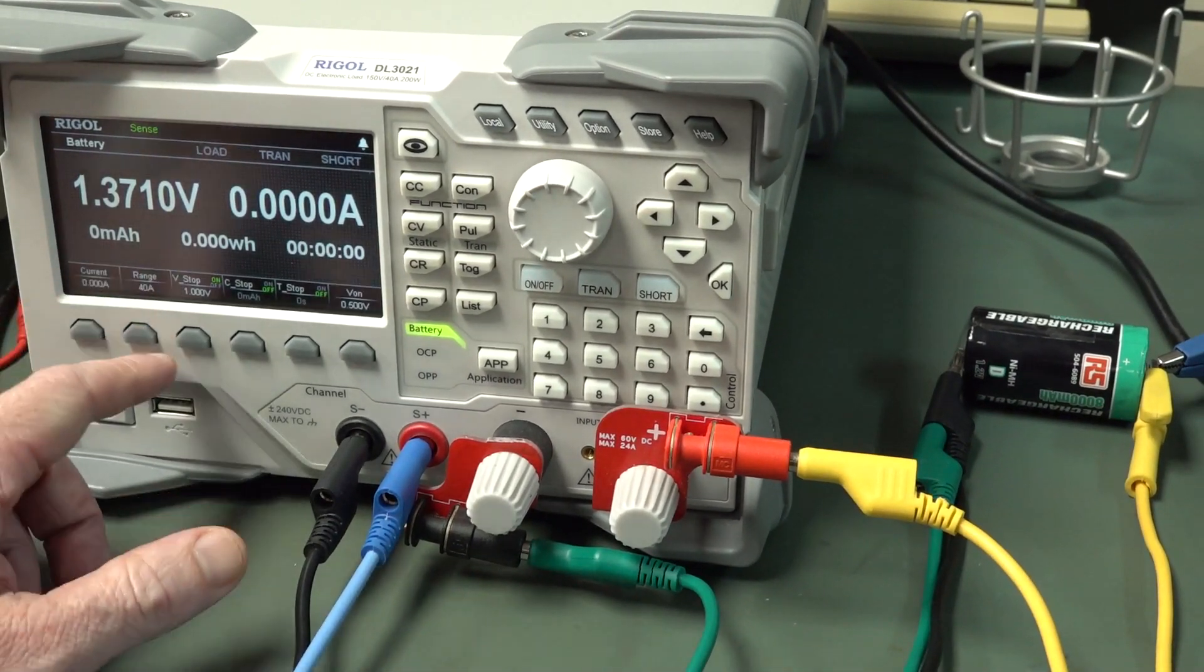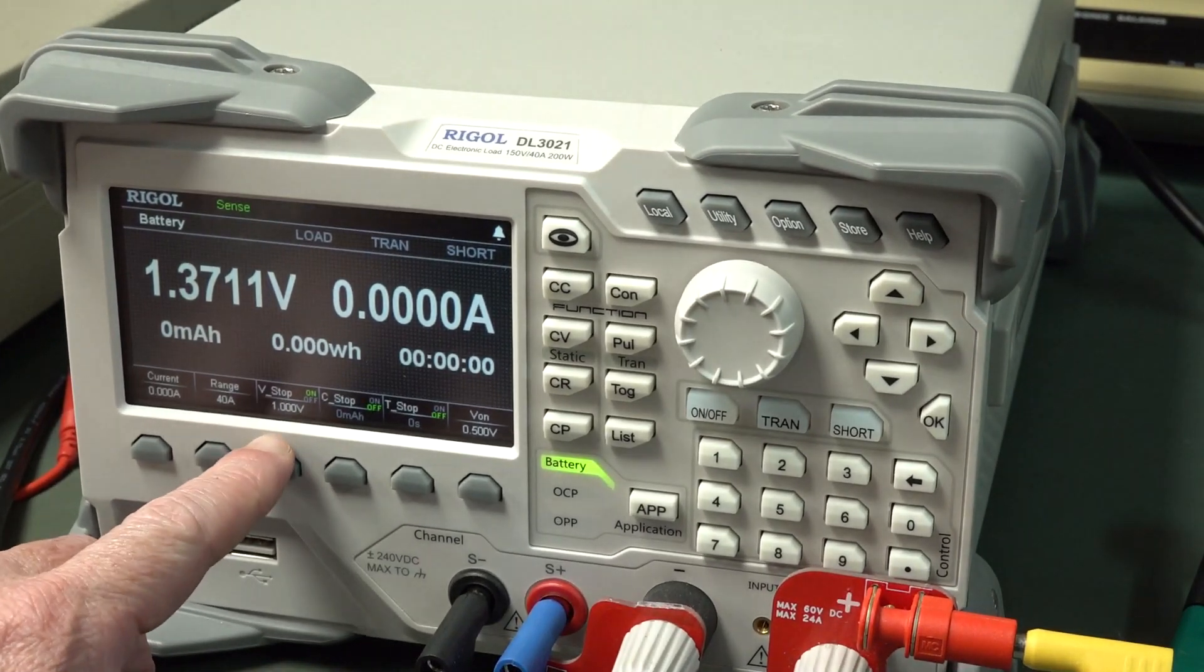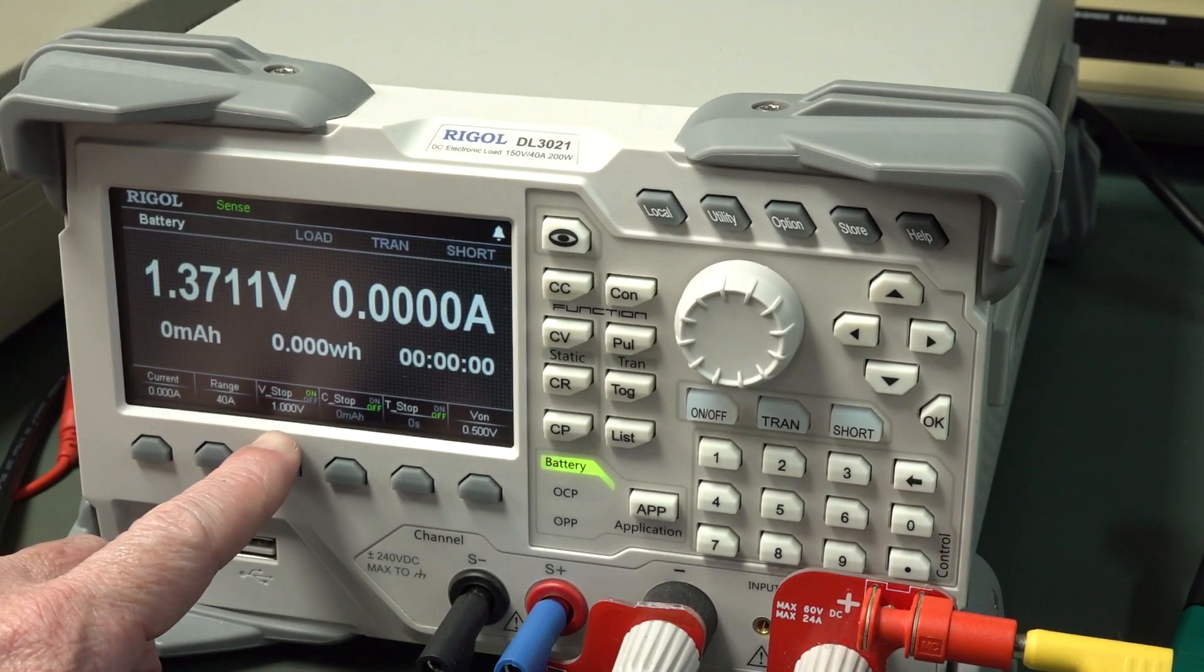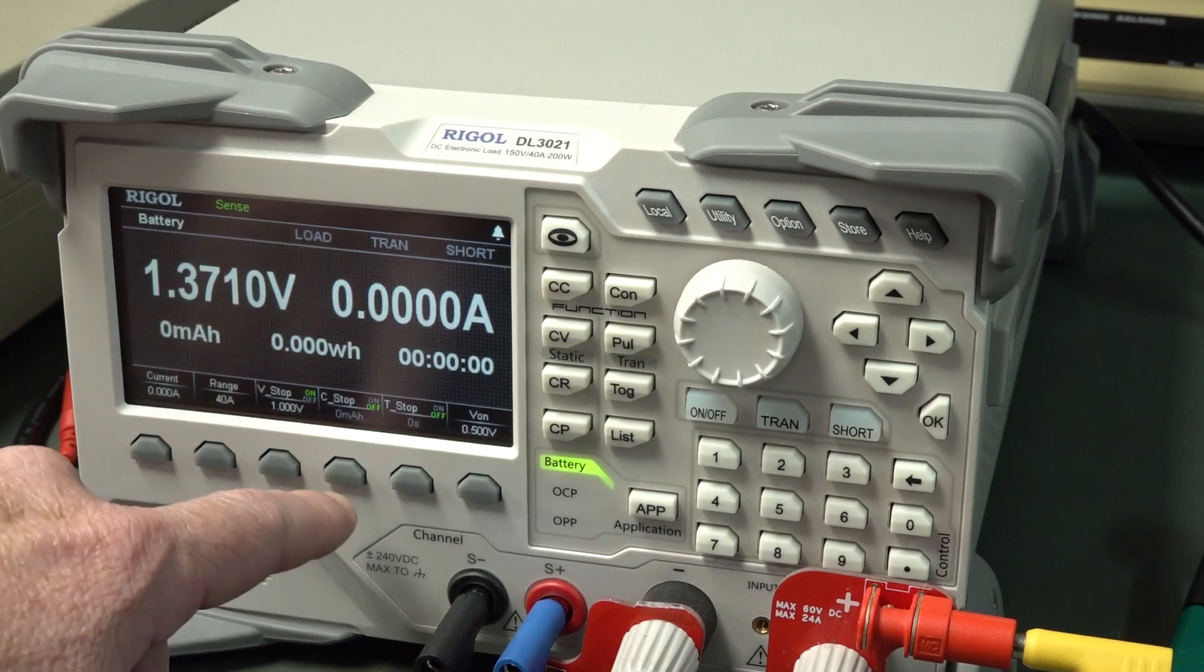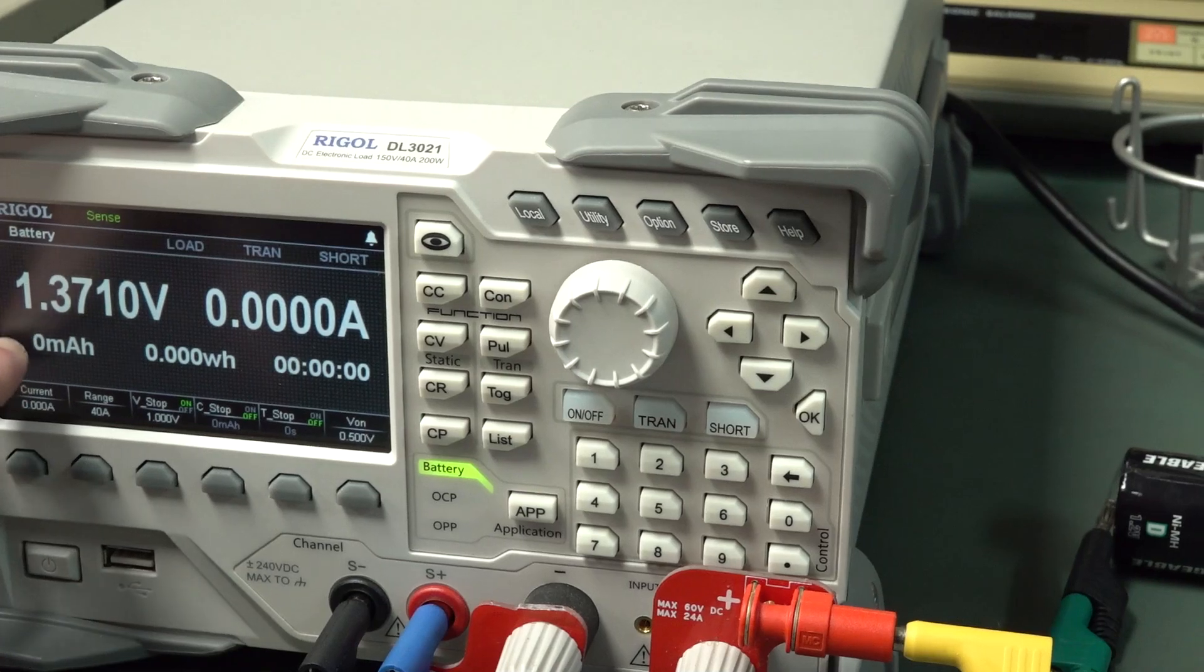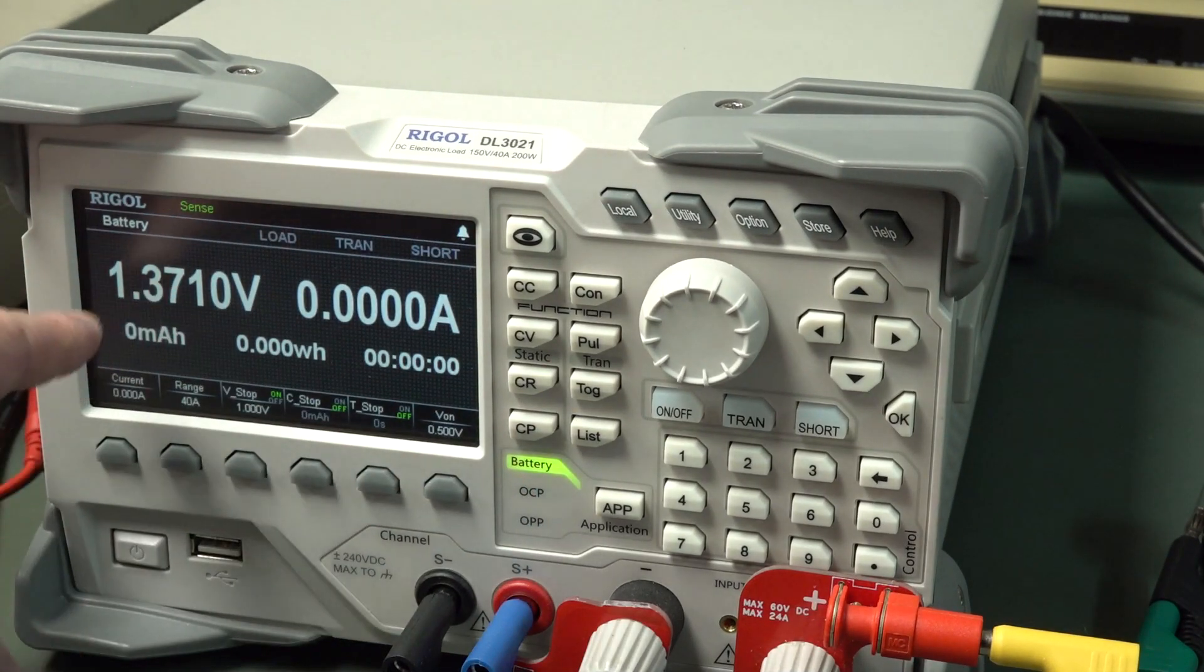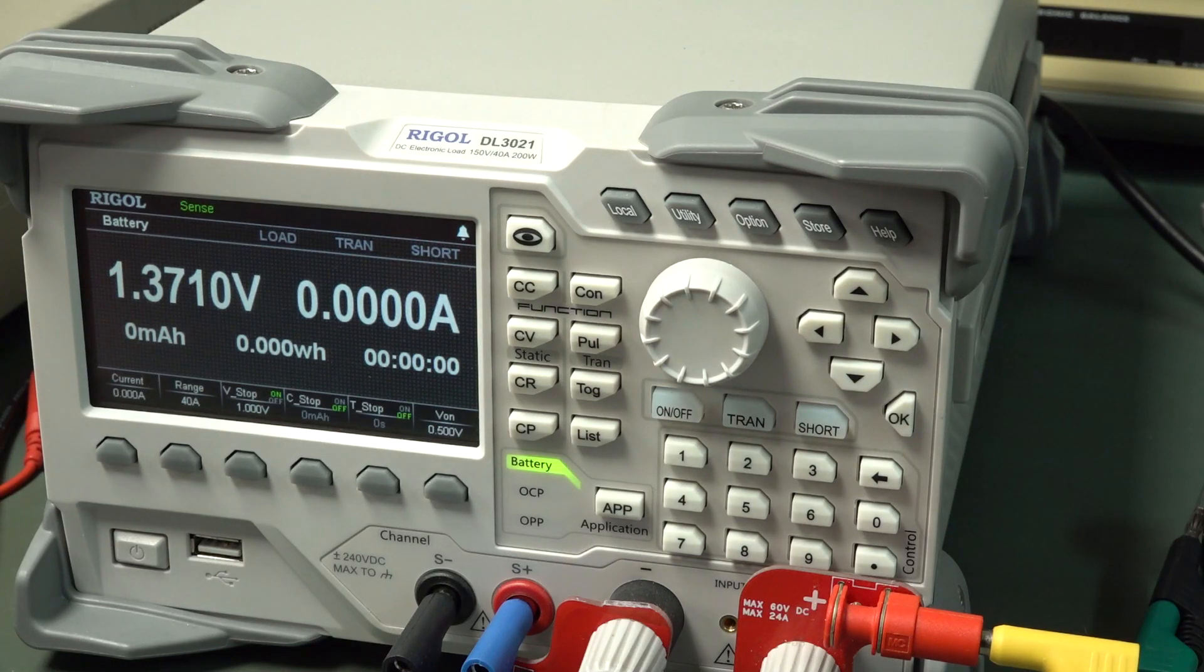I've got my electronic load here. I'm going to set it to cut out at 1 volt here, which is a nominal sort of cut-out voltage. And I won't set any timeout or anything like that. So we'll get our milliamp hour figure here. We've got a battery discharge application here. As you can see, it's currently 1.37 volts.